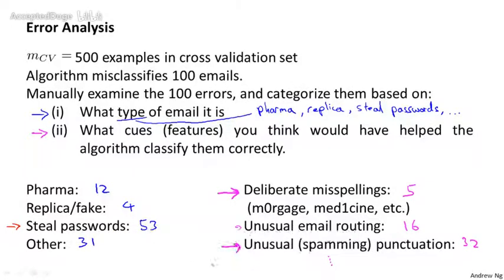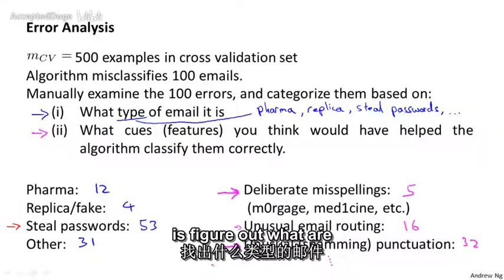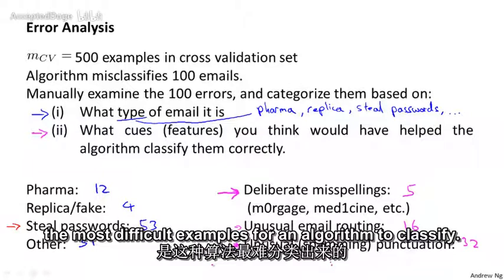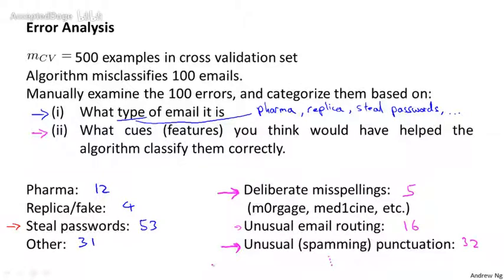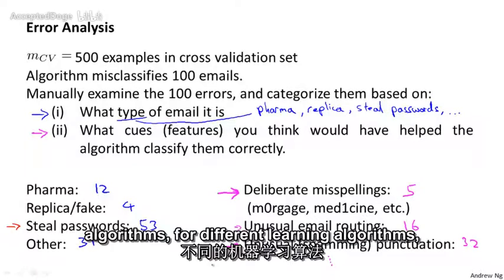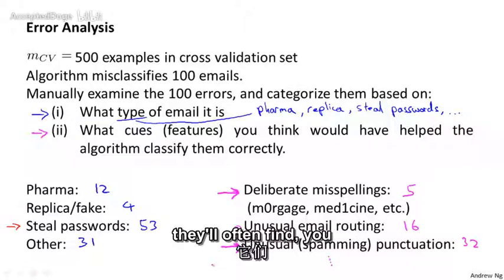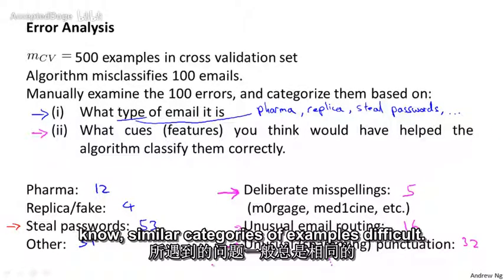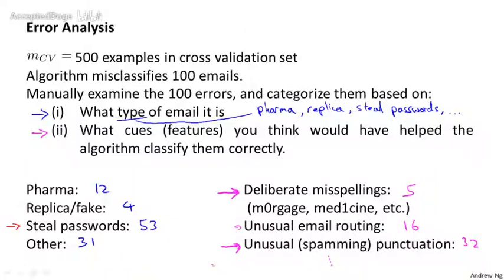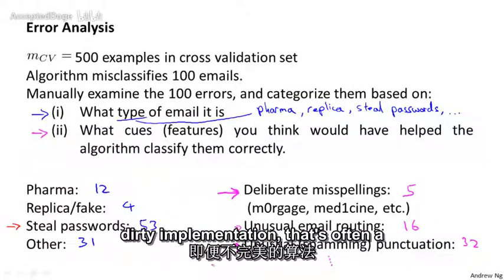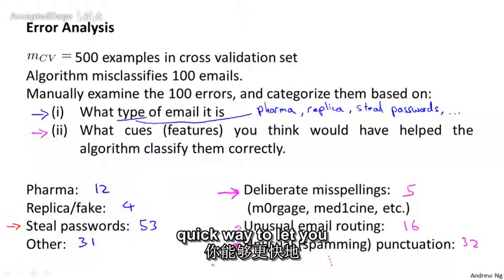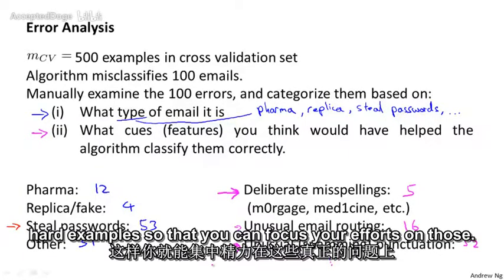And this also explains why I often recommend implementing a quick and dirty implementation of an algorithm. What we really want to do is figure out what are the most difficult examples for an algorithm to classify. And very often, for different algorithms, for different learning algorithms, they'll often find similar categories of examples difficult. And by having a quick and dirty implementation, that's often a quick way to let you identify some errors and quickly identify what are the hard examples, so that you can focus your efforts on those.